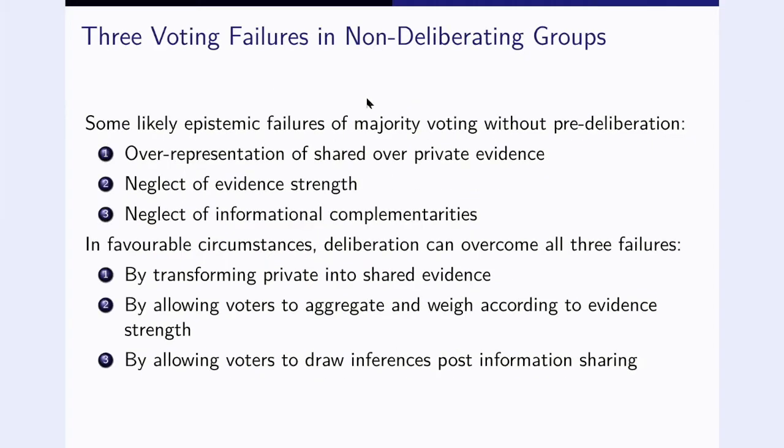Now what could go wrong in non-deliberating groups? Here are three potential issues. First, one could see an over-representation of shared or private evidence. What is shared is seen by many and will be taken into account by many, and what is private remains private and gets only counted once. So deliberation could help to balance things out. Secondly, in the conversion from private evidence to votes, there's a neglect of evidence strength, and third, there might also be a neglect of information complementarities.